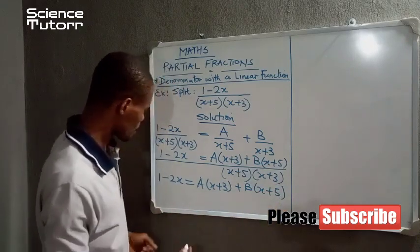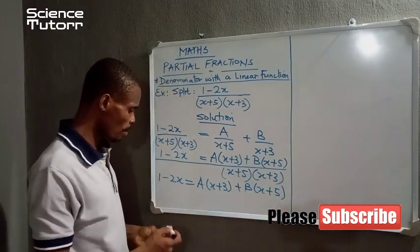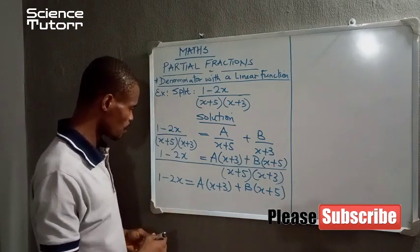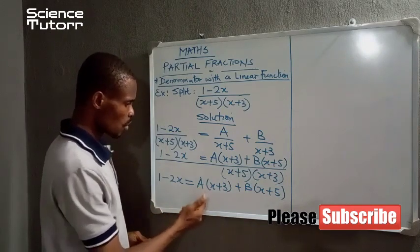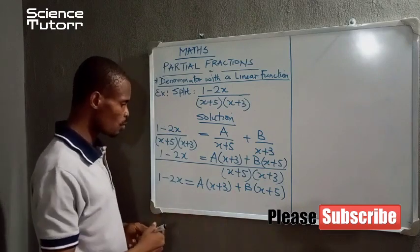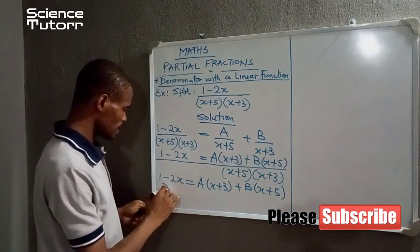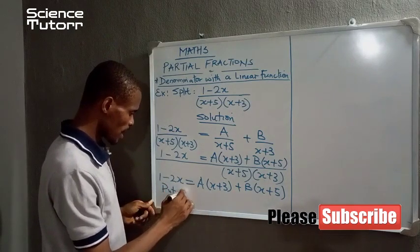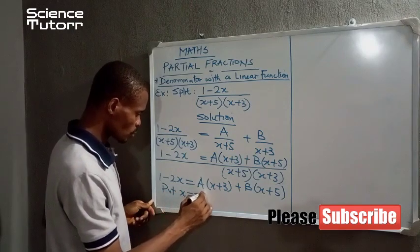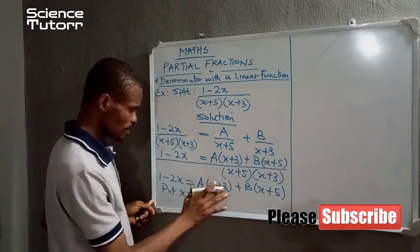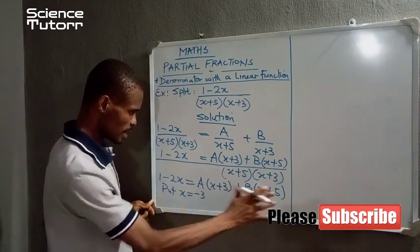Like I said before, a method known as the cover-up method will be used in solving for the values of A and B. And how is that done? We start by saying, put x to be equal to minus 3 so that we can terminate A and then find B.